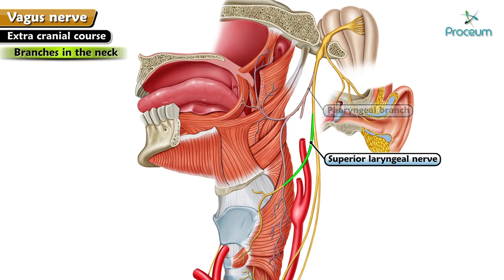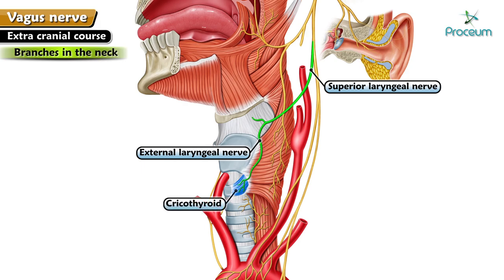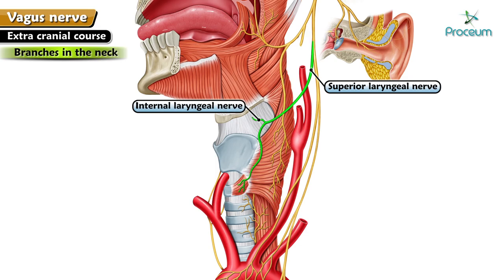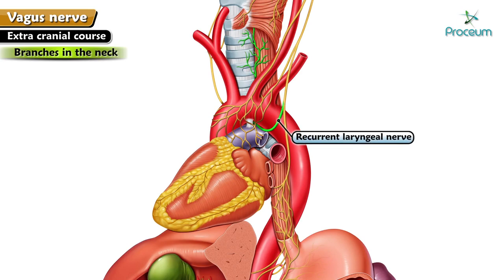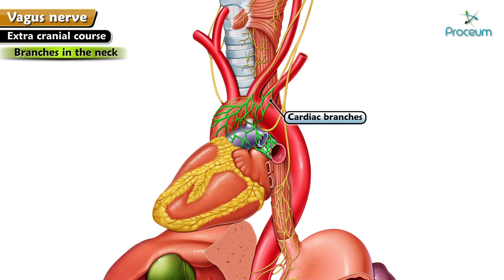The external laryngeal nerve supplies the cricothyroid and inferior constrictor muscles, whereas the internal laryngeal nerve is a sensory nerve supplying the mucosa of the larynx above the vocal cords. The recurrent laryngeal nerves on both sides supply all intrinsic muscles of the larynx except the cricothyroid, and provide sensory fibers to the mucosa of the larynx below the vocal cords. Cardiac branches are two sets — superior and inferior — forming the superficial and deep cardiac plexus to supply the muscles of the heart.